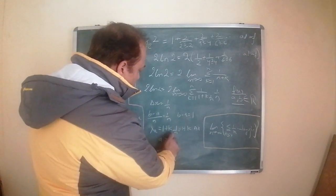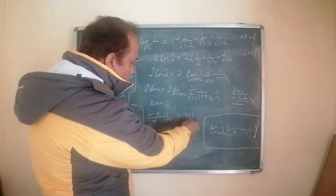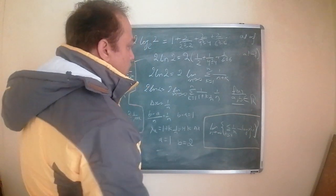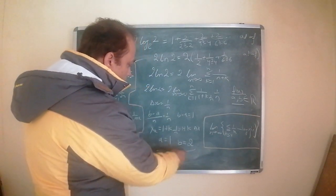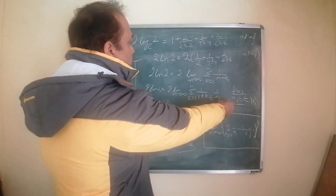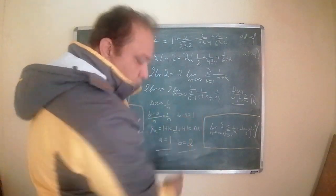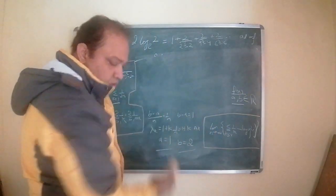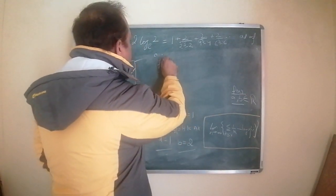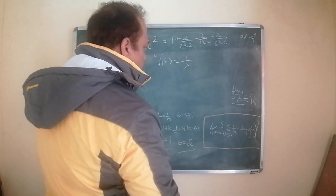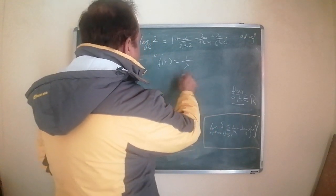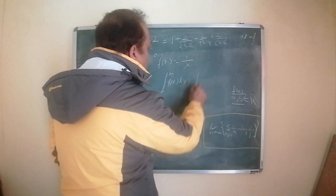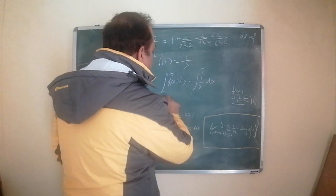I have the length of the interval b minus a equal to 1, and a equal to 1, which implies b equals 2. So I have the upper and lower bounds: b equals 2 and a equals 1. My function f(x) is nothing but 1 upon x. So I can convert that Riemann sum into a definite integral from a to b of f(x) dx.